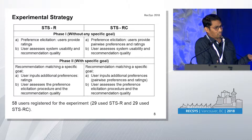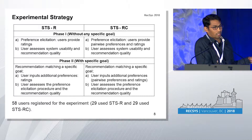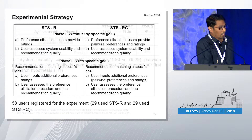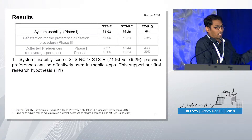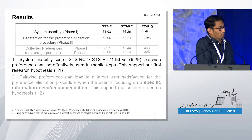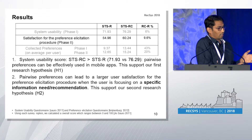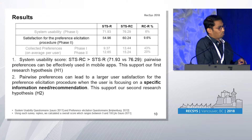To differ from phase one, in phase two there is a specific goal, because we wanted to understand the effectiveness of eliciting pairwise preferences when there is a specific goal. At the end of each phase, users filled a questionnaire, and we calculated an overall score from 0 to 100. The higher the score, the better the system performance.